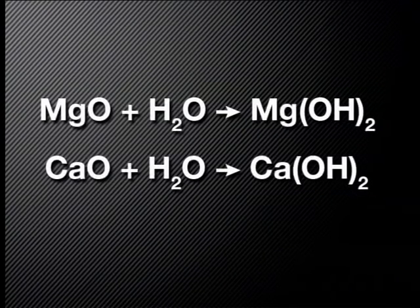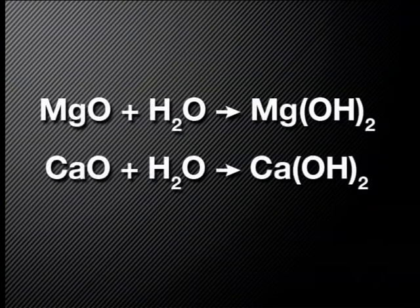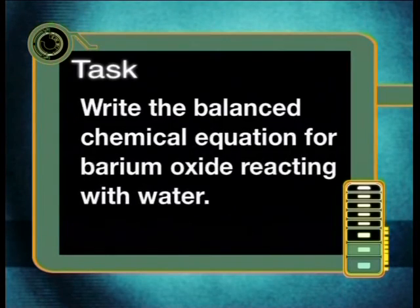Can you see the pattern in the chemical equations we have written so far? MgO + H₂O → Mg(OH)₂, and CaO + H₂O → Ca(OH)₂. Elements from the same group react in the same way. Now, today's task: write the balanced chemical equation for barium oxide reacting with water. Please join me for our next lesson where we will investigate the reactions of some of the transition metals with the oxygen in air.